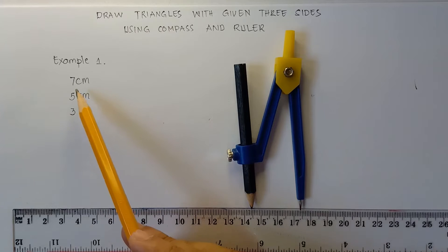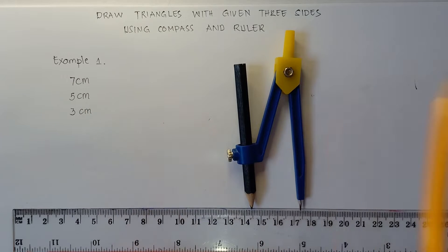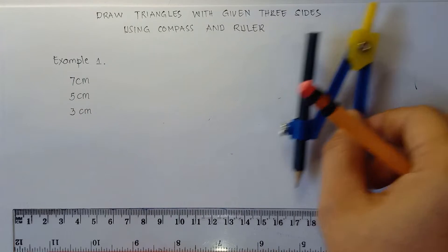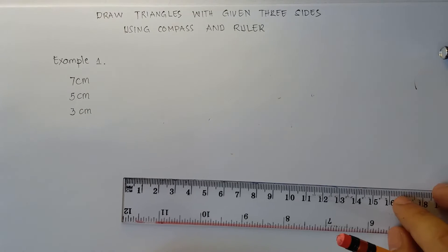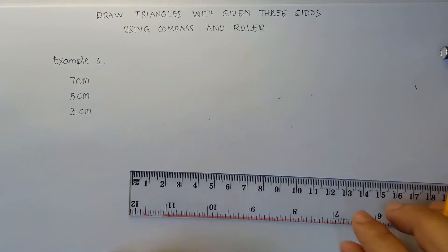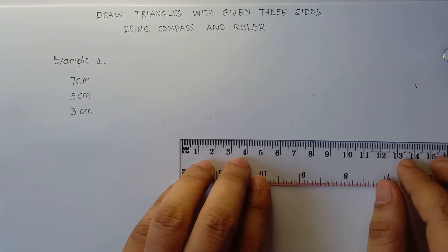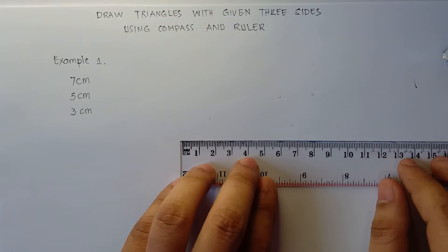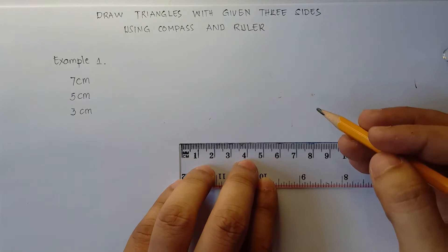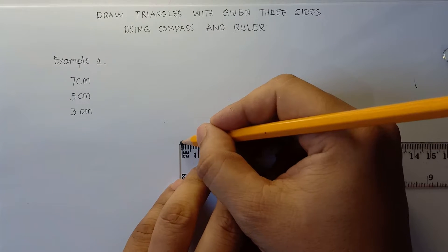We have given 7 centimeters, 5 centimeters, and 3 centimeters. The first thing you need to do is draw a horizontal line that is 7 centimeters — you always draw the longest line first. So 7 centimeters.